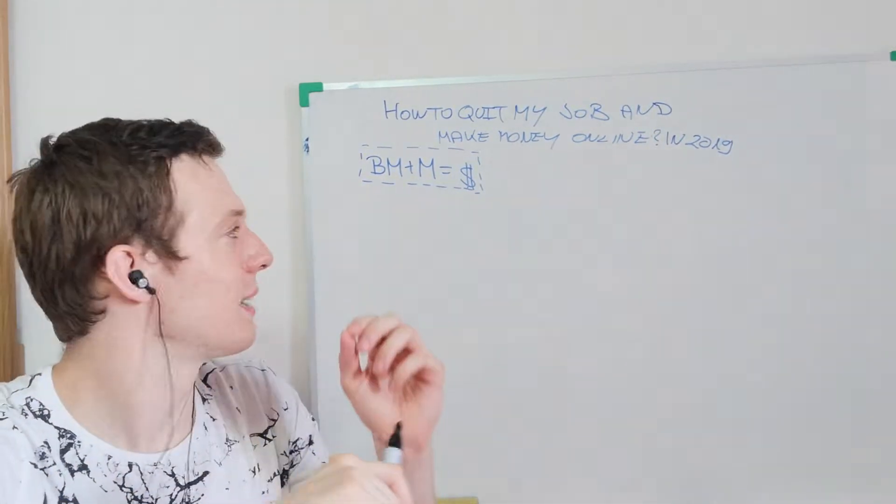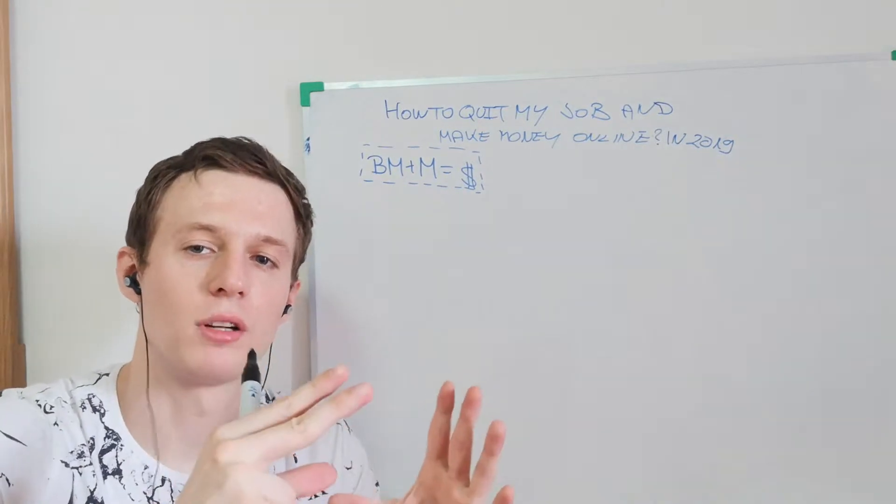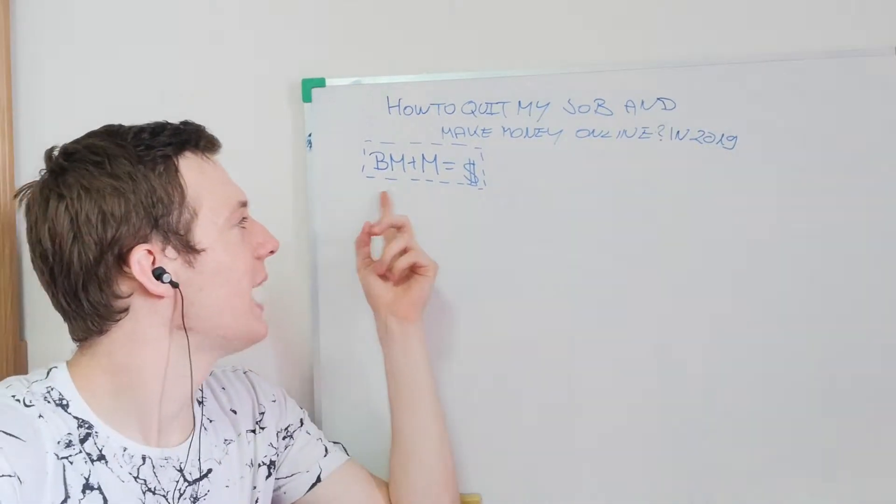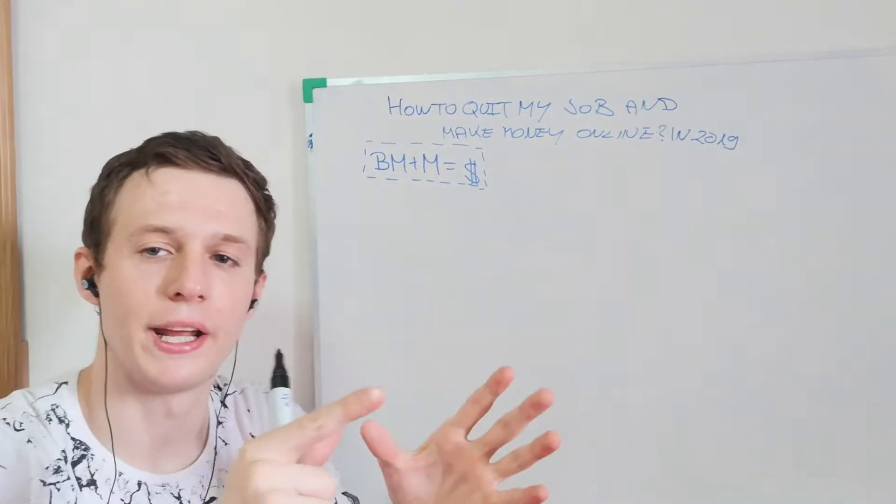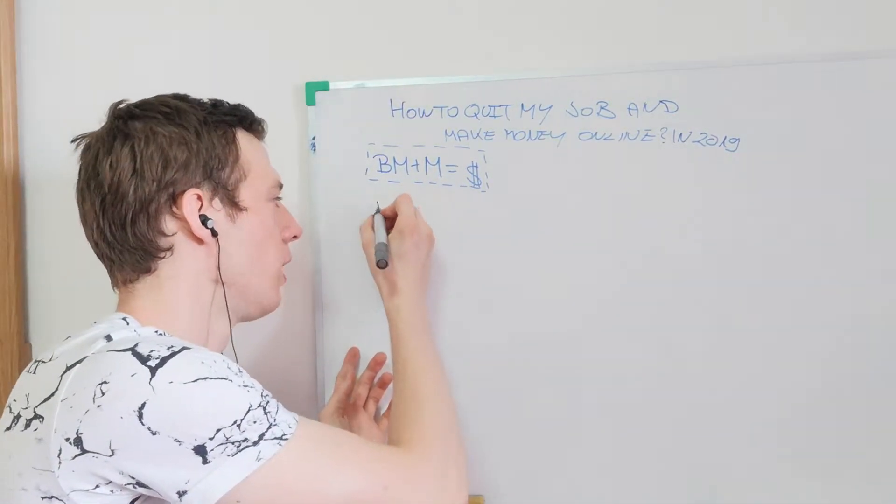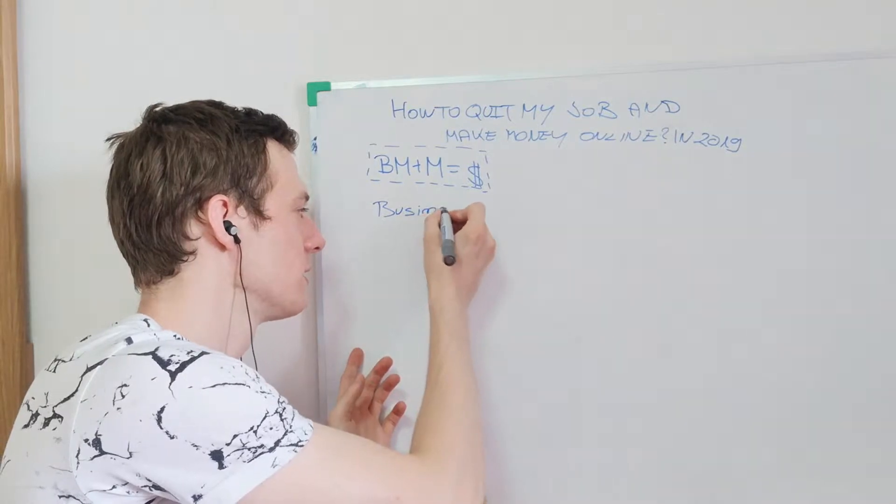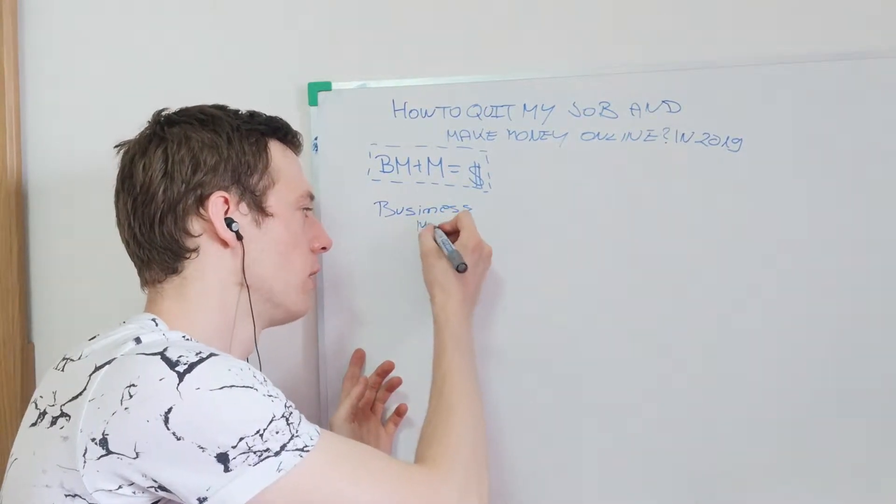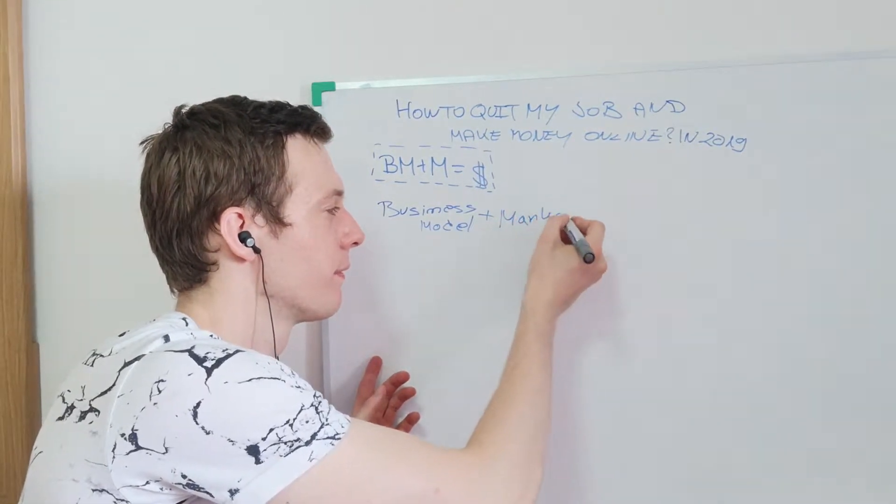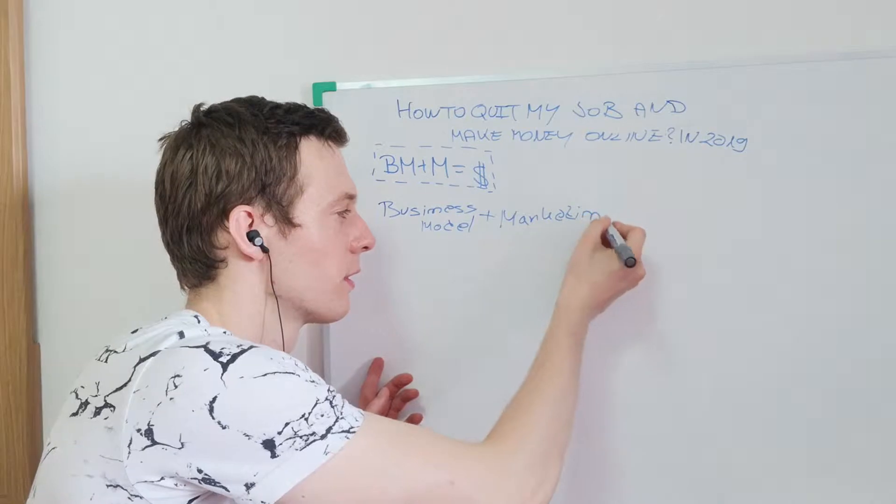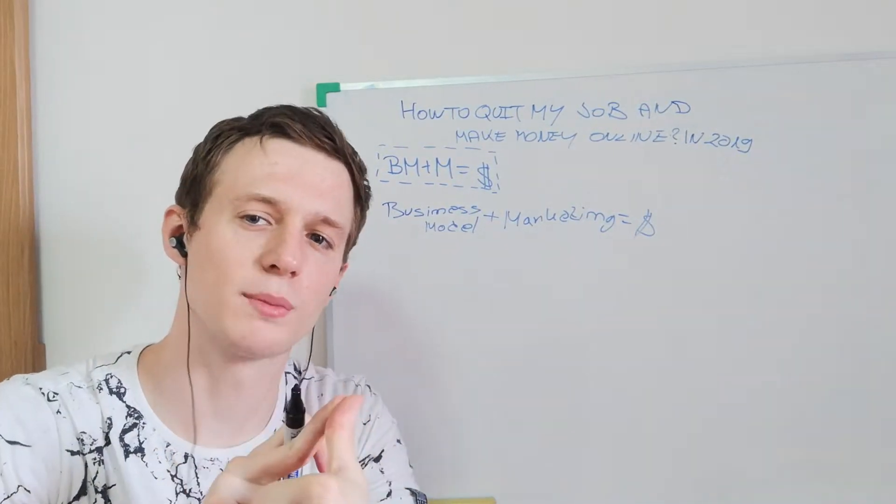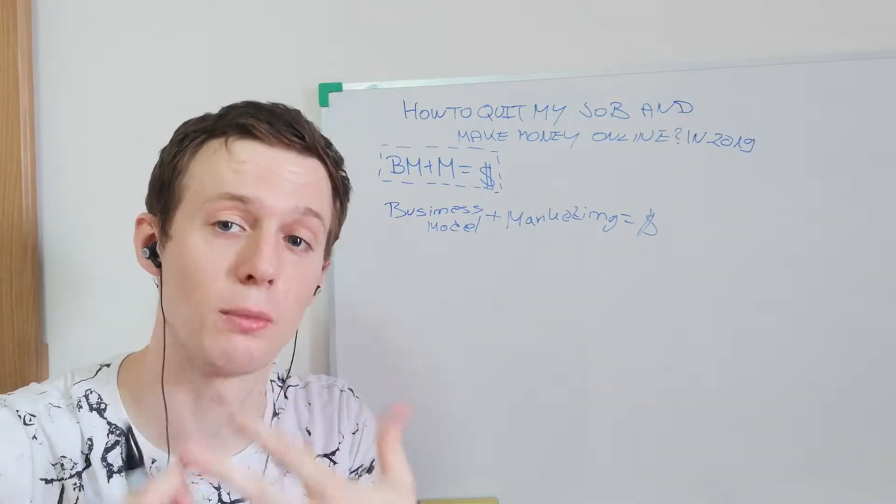So in this video I will share with you the system, a formula that you have to understand and master if you want to quit your job and make money online. So BM plus M equals money. So what does that actually mean? BM is business model. So you need to have the right business model plus marketing equals money. So you need to have the right business model and right marketing skills and you will make money.